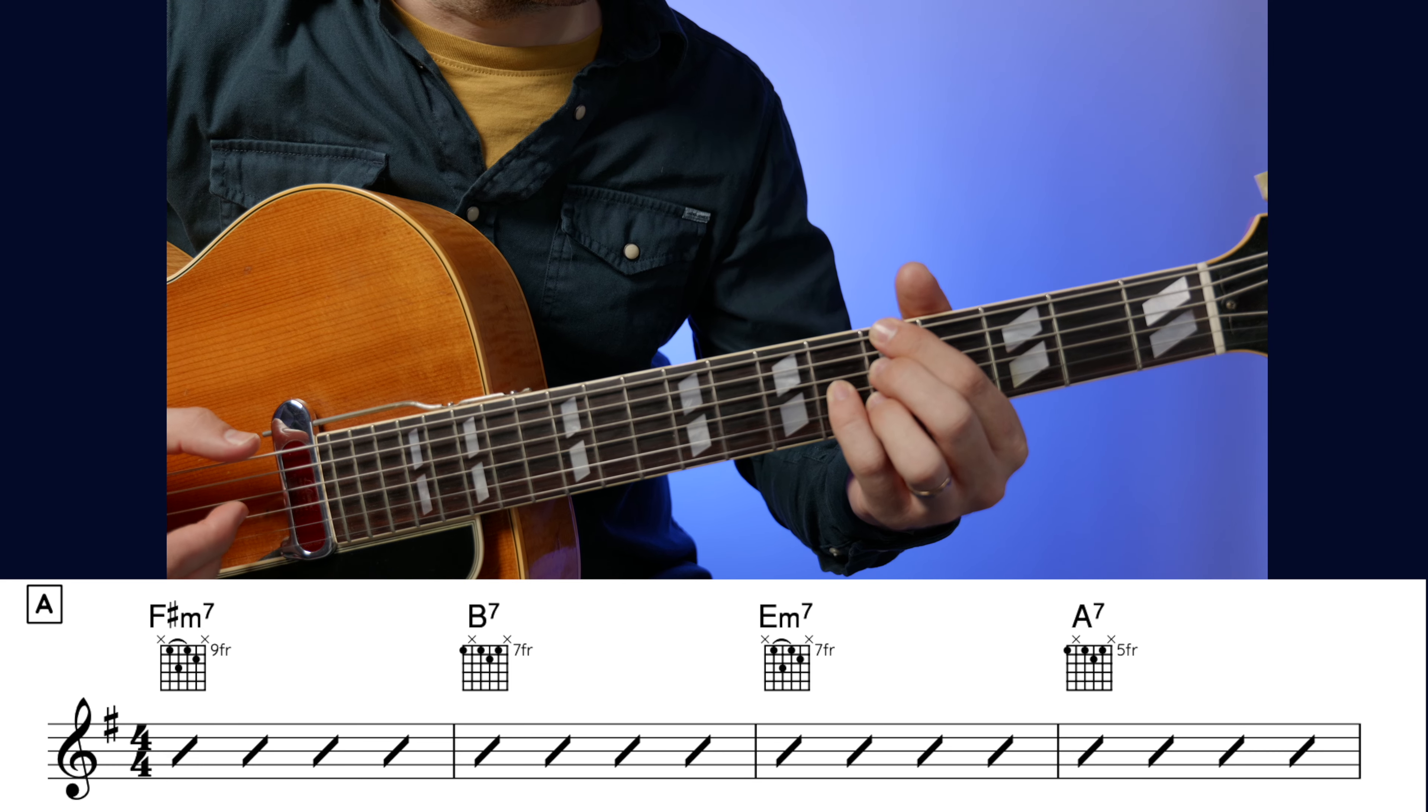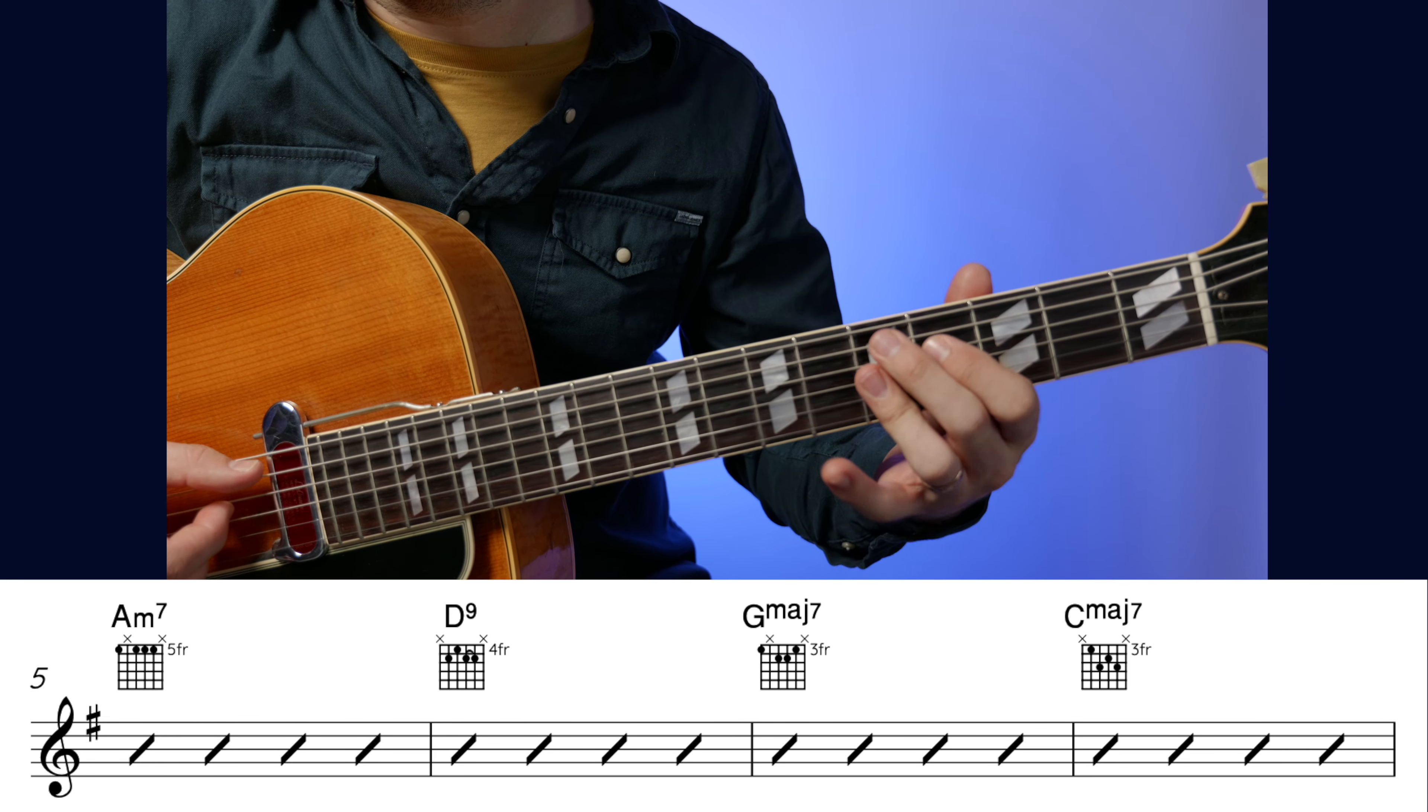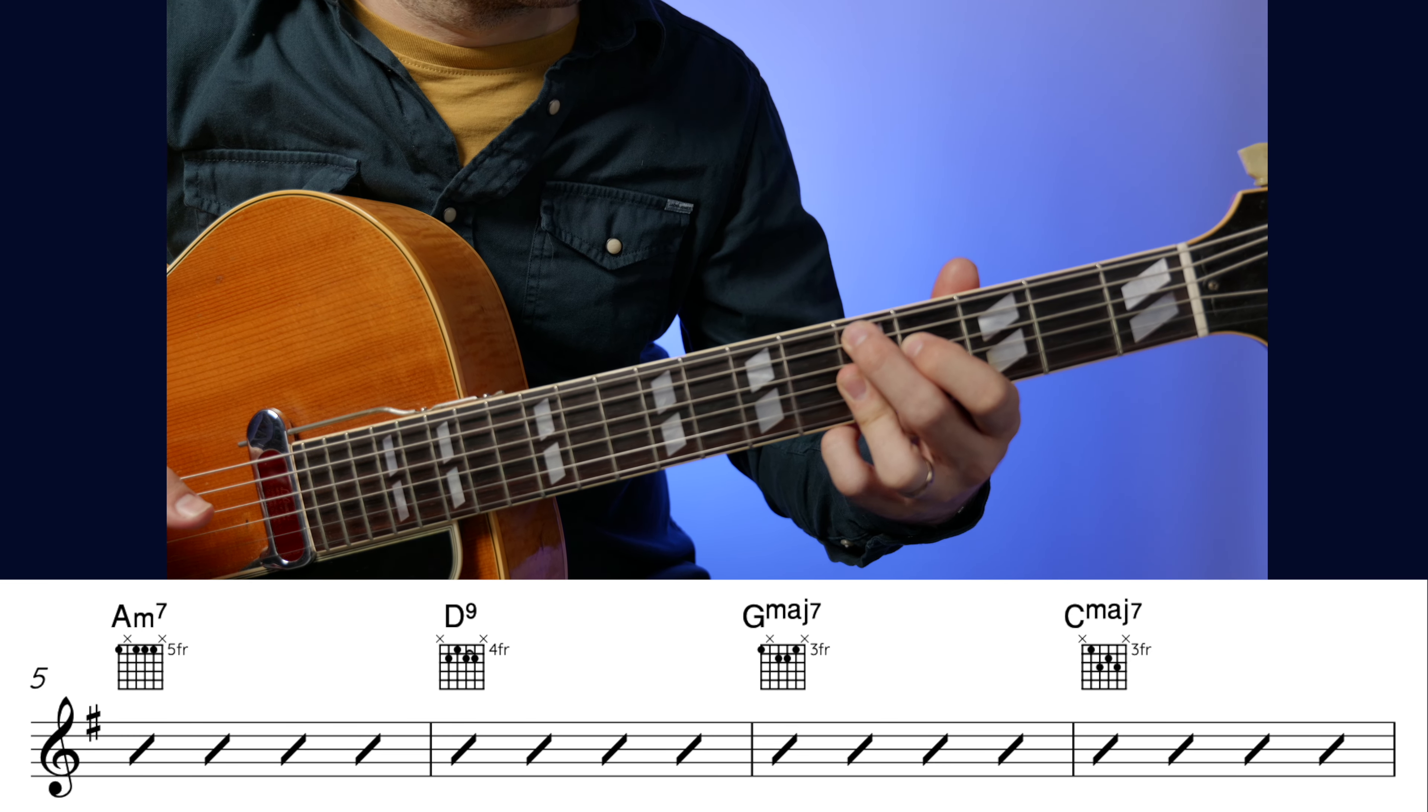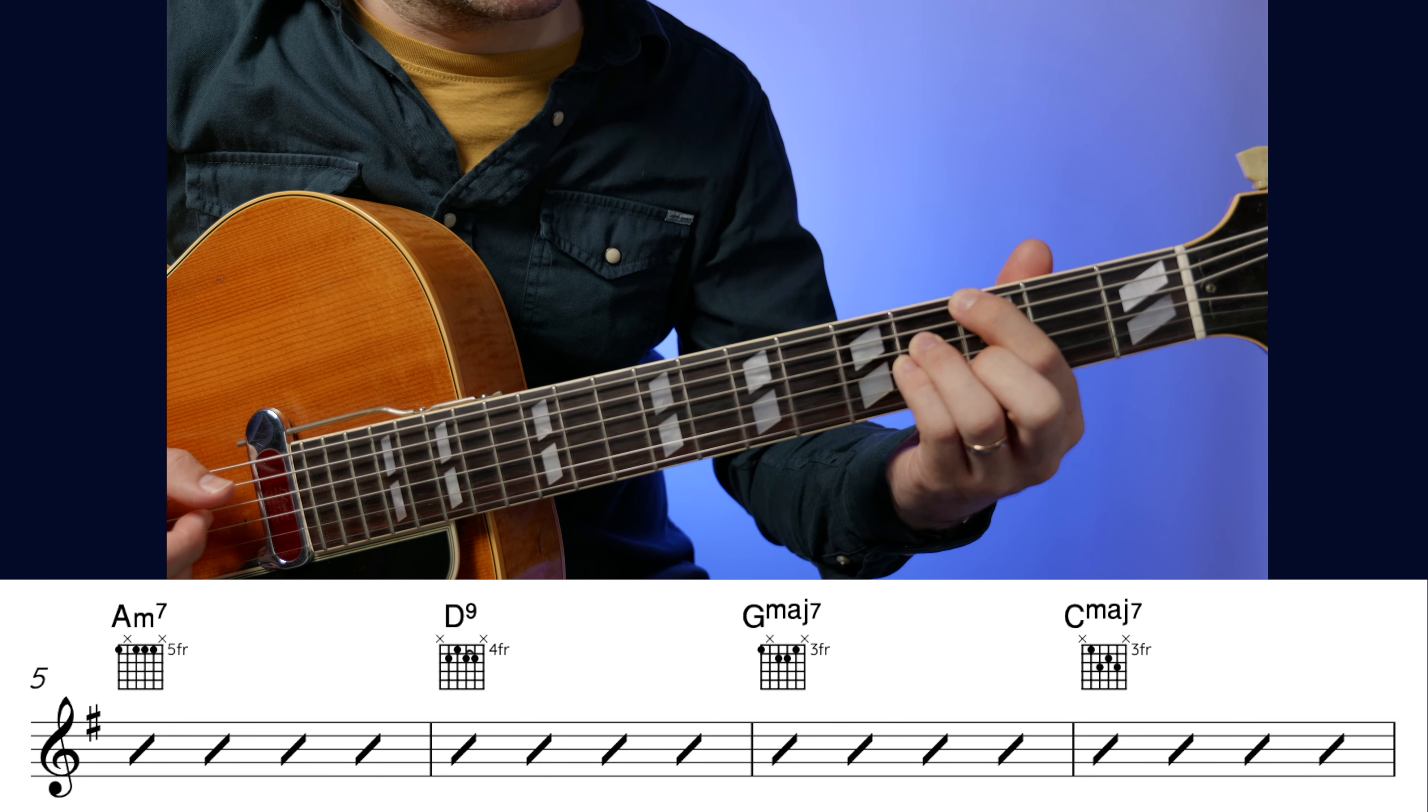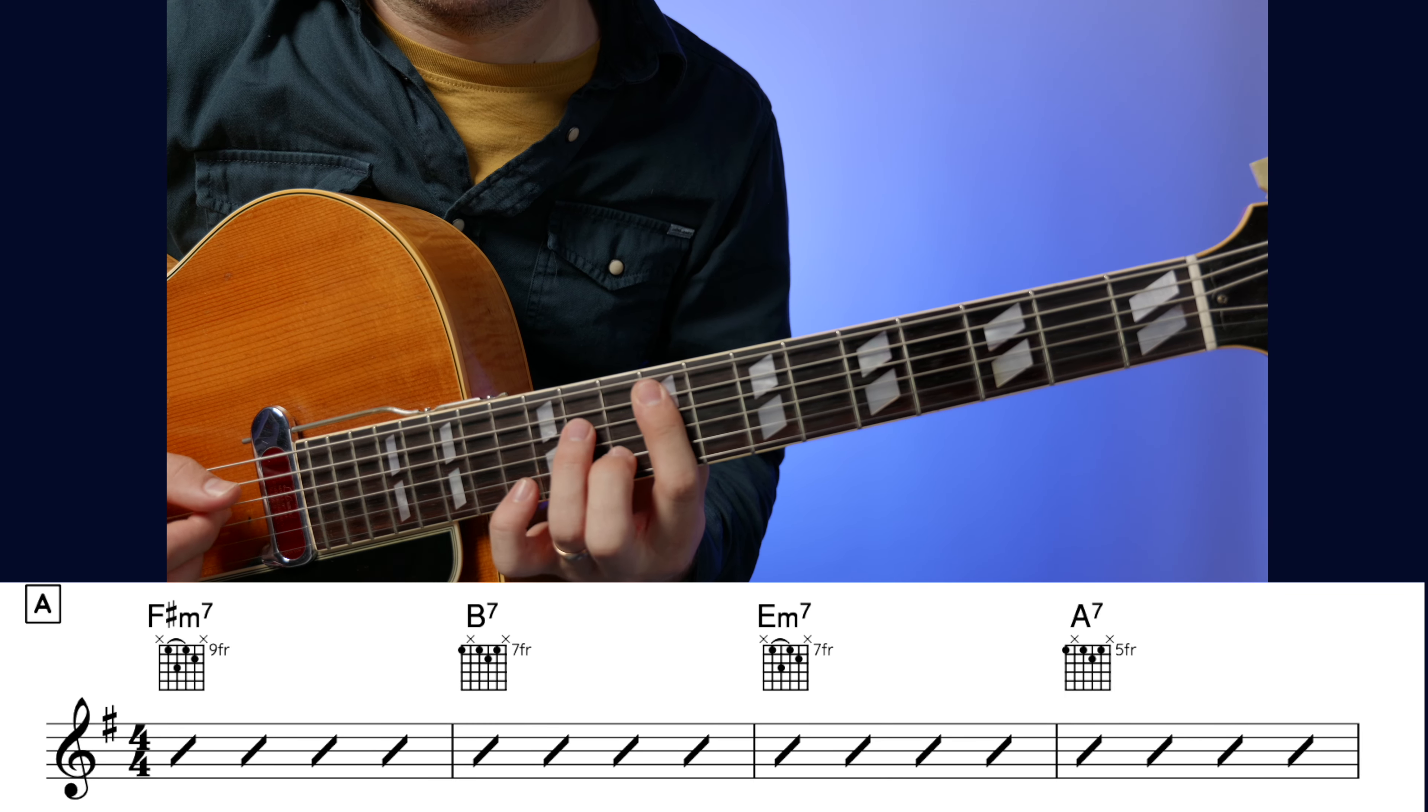Then we turn this into a minor chord, A minor 7, to D9. Some people like to play D7 here or even D7 flat 9. Leading us nicely to G major over to C major, and that's our first eight bars.